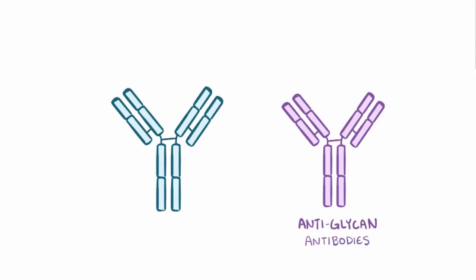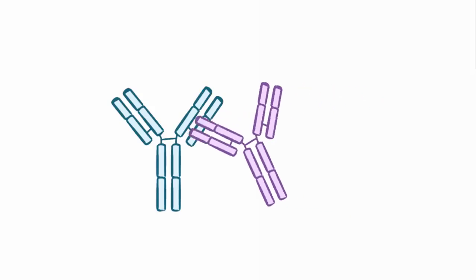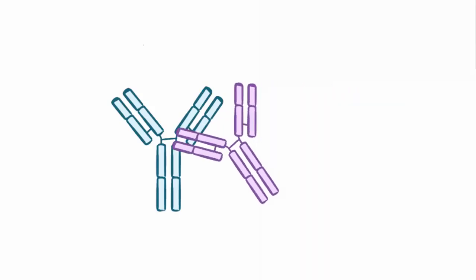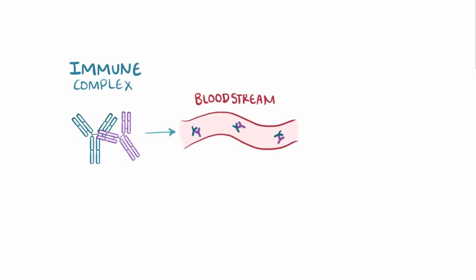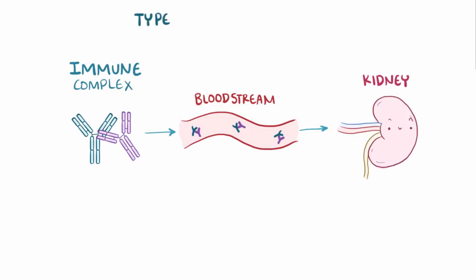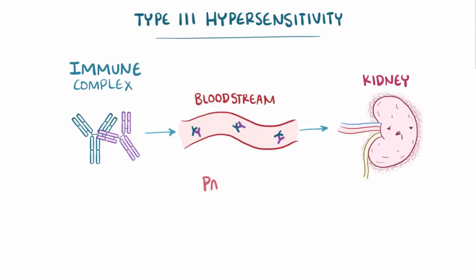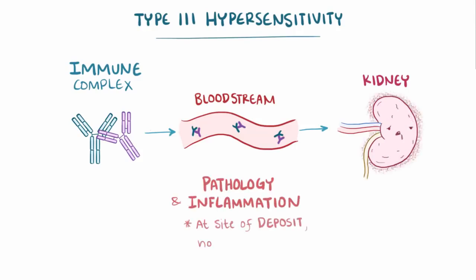When these antiglycan IgG antibodies bind to abnormal IgA1, immune complexes are formed. These immune complexes can travel through the bloodstream where they get trapped at sites of filtration, like the kidney. IgA nephropathy is therefore a type III hypersensitivity disorder, meaning that pathology and inflammation will happen at the site the immune complexes deposit, not where they're formed.